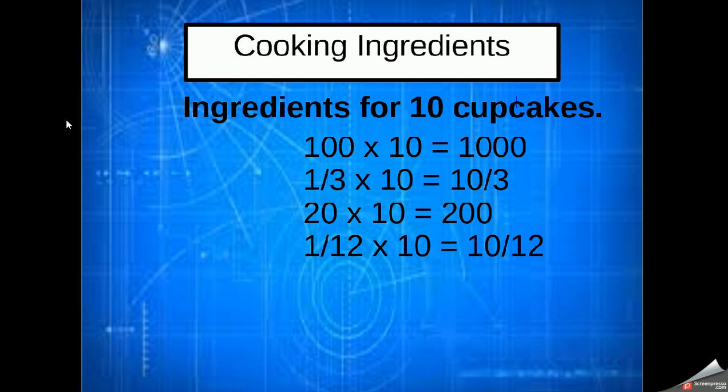So a hundred times ten gives me a thousand, a third times ten gives me ten thirds, twenty times ten gives me two hundred, and one twelfth times ten gives me ten twelfths. So we've now got the ingredients for ten cupcakes. Remember if I'd wanted eight cupcakes I would have multiplied it by eight, if I'd wanted nine cupcakes I would have multiplied it by nine, and so on.